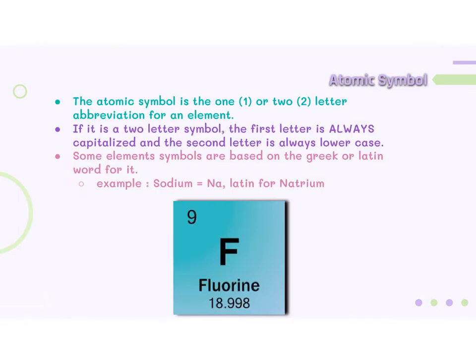The element box of a certain element on the periodic table can give us an enormous amount of information about the element. The atomic symbol is one of those pieces of information. The atomic symbol is a one- or two-letter abbreviation for an element. If it's a two-letter symbol, the first letter is always capitalized and the second letter is always lowercase.